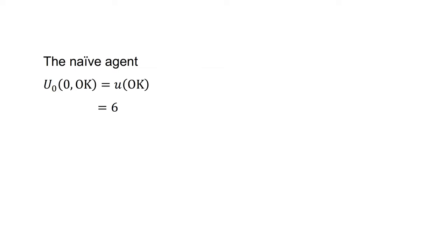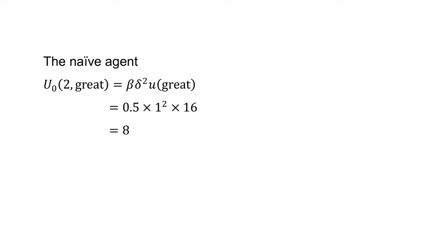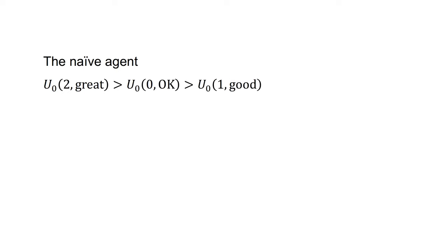First, we consider the naive agent — they calculate utility from the perspective of today. Utility from watching the okay movie at t=0 equals the utility of the okay movie, which equals 6. Utility of watching the good movie next week equals beta*delta*utility(good) equals 0.5 times 1 times 10, which equals 5. The utility of watching the great movie in two weeks equals beta*delta²*utility(great) equals 0.5 times 1² times 16, which equals 8. As the utility of the great movie in two weeks is greater than the utility of the okay movie today, which is greater than the utility of the good movie next week, the naive agent will choose the great movie in two weeks.